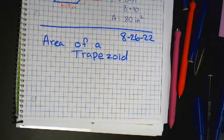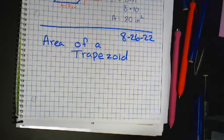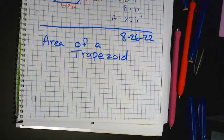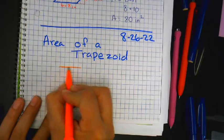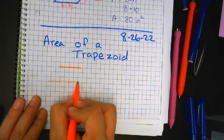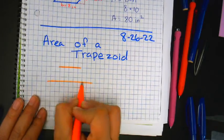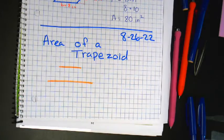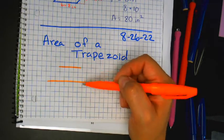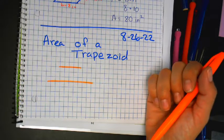All right, a trapezoid is a four-sided shape. It has four sides, but it's not a rectangle because it doesn't have equal sides. So we're going to draw a horizontal line on top and a horizontal line at the bottom, but the bottom line is longer. That's how you have to draw it, and we're going to start drawing it right now.